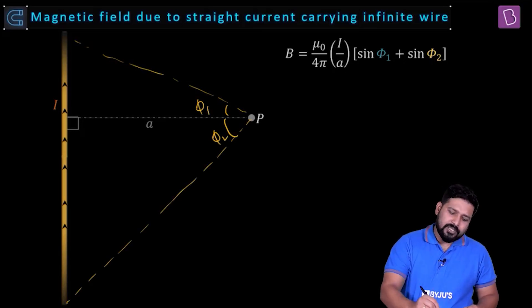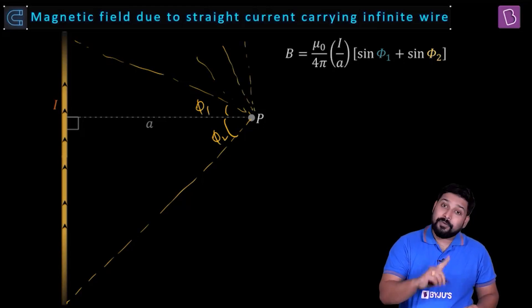If you go on extending it, the value of phi 1 will go on increasing. If it extends up to infinity, phi 1 will become 90 degrees.